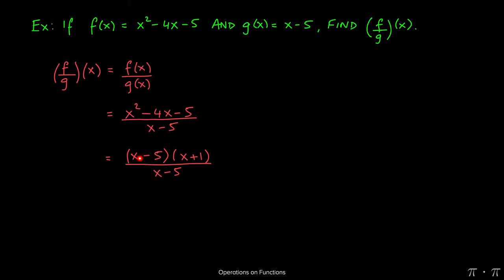Now at this stage, you'll notice that there's x minus 5 and x plus 1 in the numerator, and x minus 5 in the denominator.